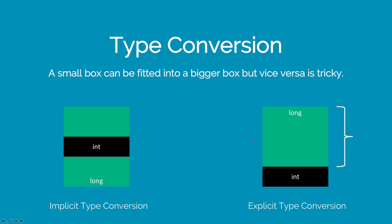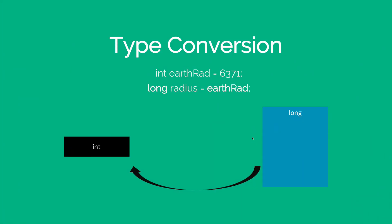So let's take a look at an example of type conversion. Let's say that you had an int variable called earthRadius that is 6371. And let's say that you have another variable called longRadius inside which you would like to store earthRadius. That is perfectly fine because a long is bigger, and what you are doing is going from right to left. Remember that this is not maths — you go from right to left and you store the value contained inside earthRadius, which is 6371, inside the variable called radius, which is why I have indicated a black arrow over here.